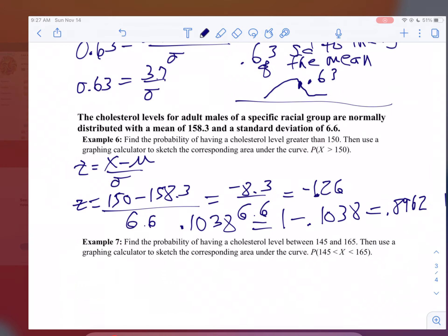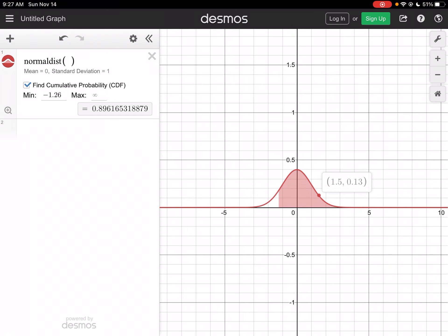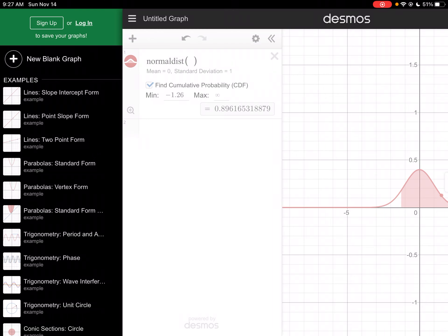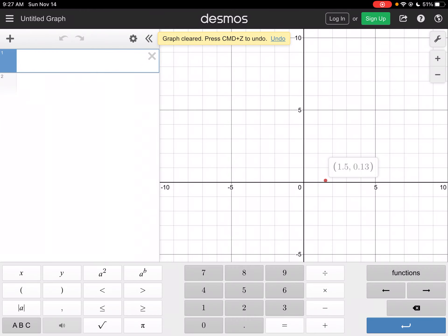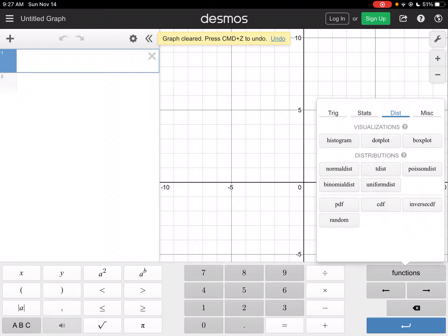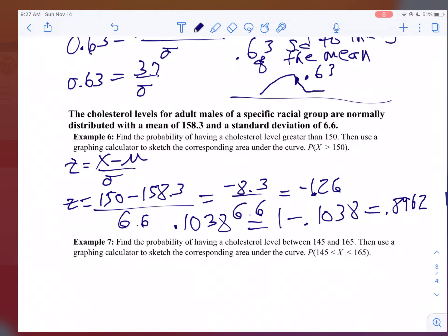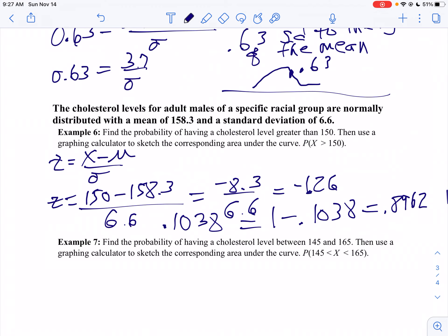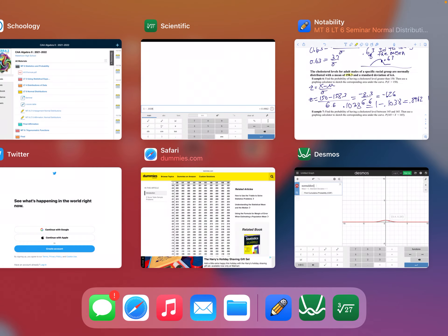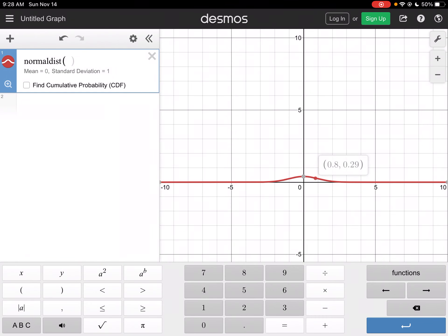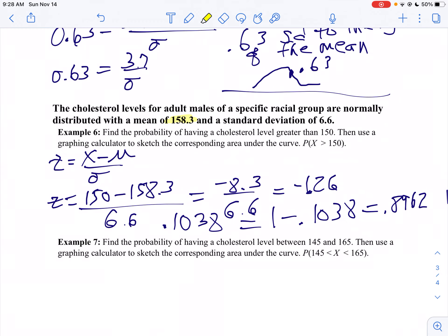Now, you could also do this normal distribution. Let me create a new graph. You don't actually have to find the z-score. So we're going to hit functions, normal distribution. But this time, rather than having to find the z-score, I'm going to type in my mean and my standard deviation in my calculator. So I know my mean is 158.3, so I'm going to say 158.3. My standard deviation is 6.6.